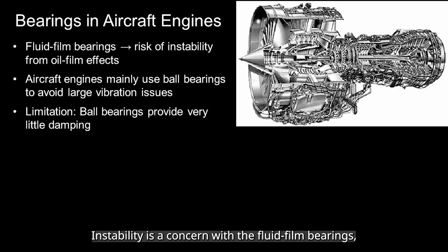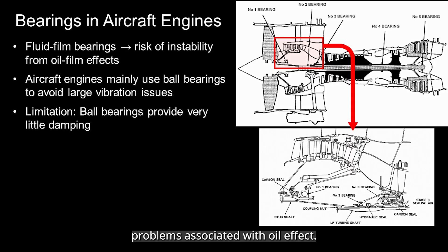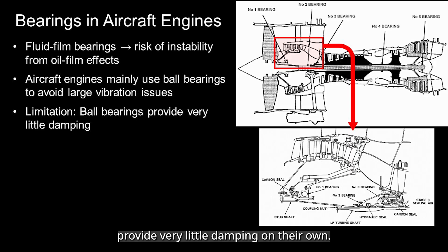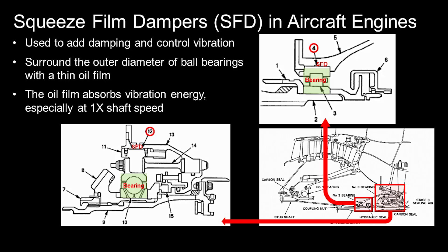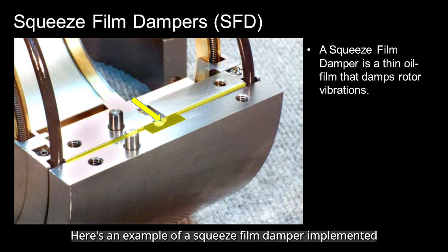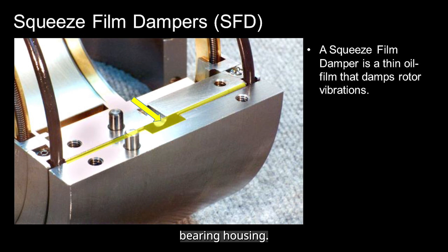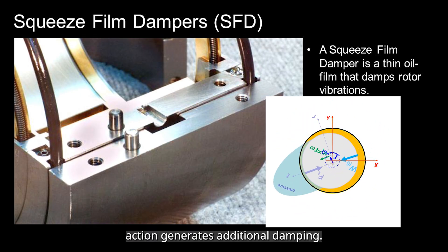Instability is a concern with fluid film bearings, which is why many aircraft engines mainly use ball bearings to avoid large vibration problems associated with oil effects. However, ball bearings provide very little damping on their own. To address this, engineers incorporate squeeze film dampers into the support system, adding damping to control vibration in aircraft engines. Squeeze film dampers surround the outer diameter of the ball bearing with a thin oil film that provides extra damping, absorbing vibration energy — in particular 1x vibration. Here is an example of a squeeze film damper implemented into the outer diameter of a tilting pad bearing housing. Oil is supplied through a narrow clearance, and as the housing vibrates, the squeeze film action generates additional damping.